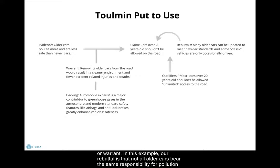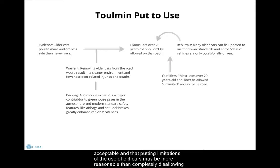In this example, our rebuttal is that not all older cars bear the same responsibility for pollution and danger, so we can qualify our claim to take this rebuttal into account by allowing that some older cars may be acceptable and that putting limitations of use on old cars may be more reasonable than completely disallowing their use.